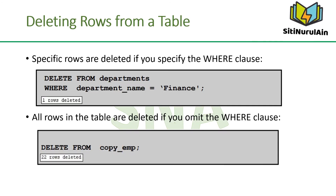You can delete specific rows by specifying the WHERE clause in the DELETE statement. The first example in the slide deletes the accounting department from the departments table. You can confirm the delete operation by displaying the deleted rows using the SELECT statement. However, if you omit the WHERE clause, all rows in the table are deleted. The second example deletes all rows from the copy_EMP table because no WHERE clause was specified.